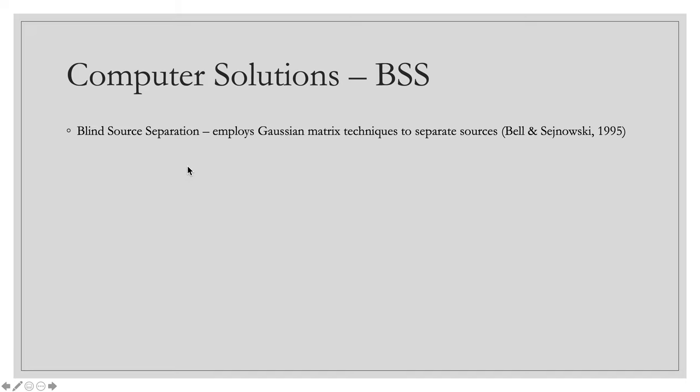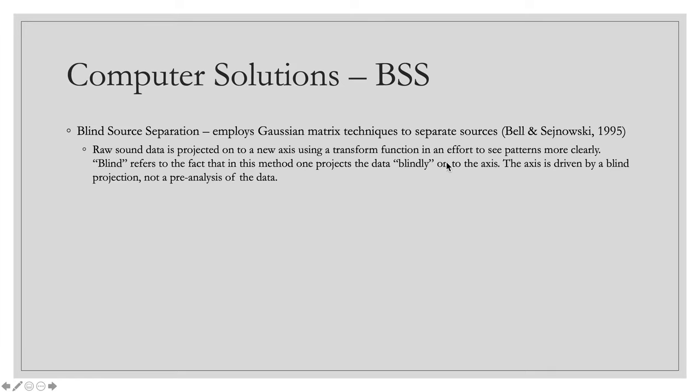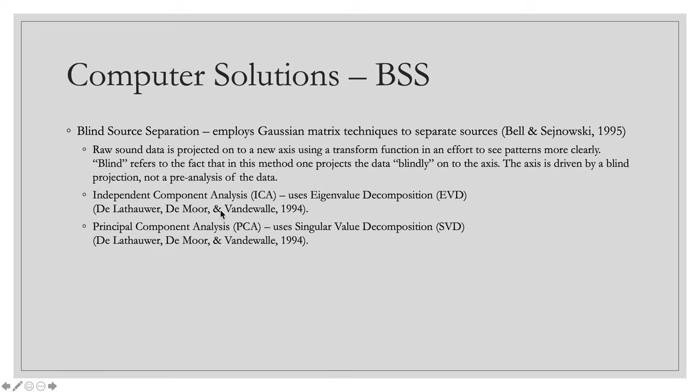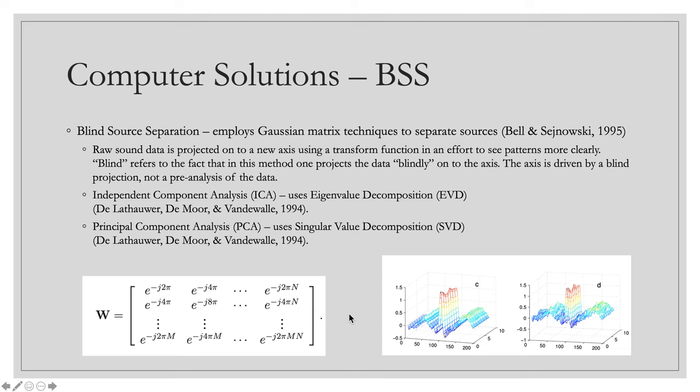Another technique that I've seen in several of your lit reviews is blind source separation. What that does is that employs Gaussian matrix techniques to separate the sources. They call it blind because in this method, the sound data goes through a transform function and is projected on a new axis so that one can see the various patterns more clearly. And blind simply refers to the fact that this method projects the data blindly onto an axis, meaning that the axis is driven by a blind projection, not there's a pre-analysis of the data and then the axis determined from that. There's two types of blind source separation: independent component analysis, which uses eigenvalue decomposition and principal component analysis, which uses singular value decomposition. Here's just a little bit of the math from that. It's very matrix heavy. Here's some of the charts that get outputs and you have to deal with.